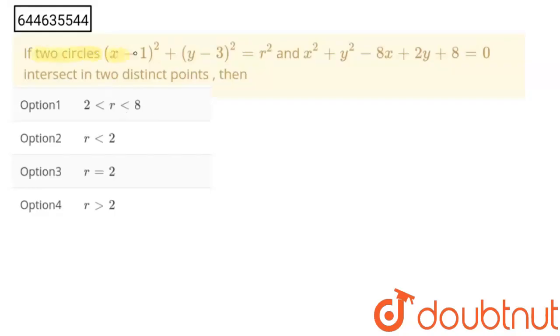circles—this is our first circle and this is our second circle—intersect in two distinct points, then these are our four options. We have to say which of the following option is correct.